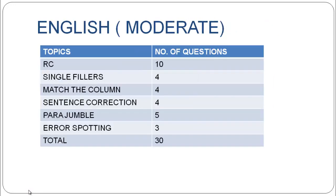Let's see what topics were asked in each section. English was of moderate level. RC had 10 questions, single fillers 4, match the column 4 questions, sentence correction 4 questions, parajumble 5 questions, and error spotting 3 questions. In total, there were 30 questions.